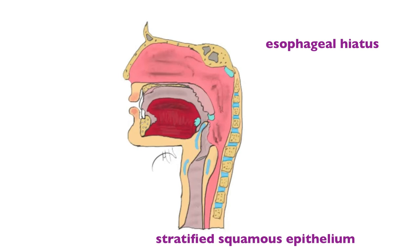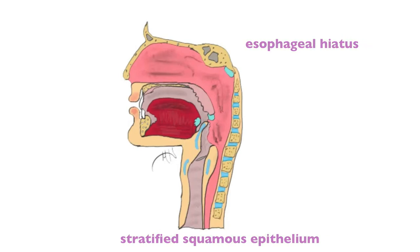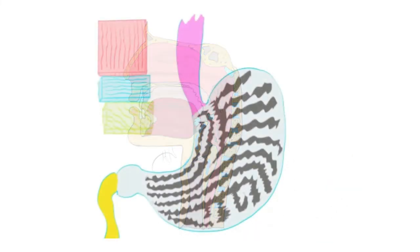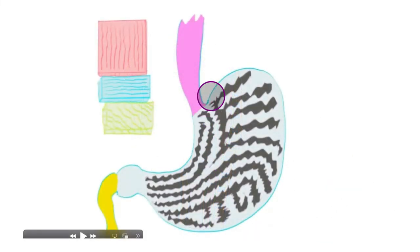The muscle of the esophagus is very interesting — it is composed of both skeletal and smooth muscle. The upper portion of the esophagus is exclusively skeletal muscle, the lower portion is exclusively smooth muscle, and in between there is a combination of both smooth and skeletal muscle.